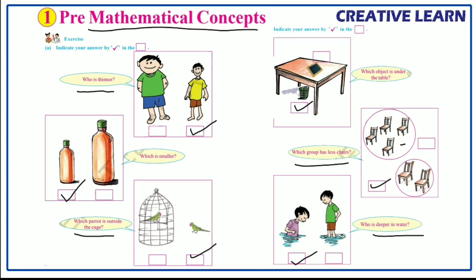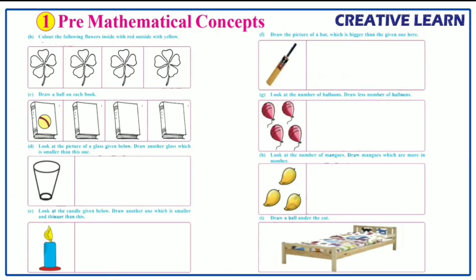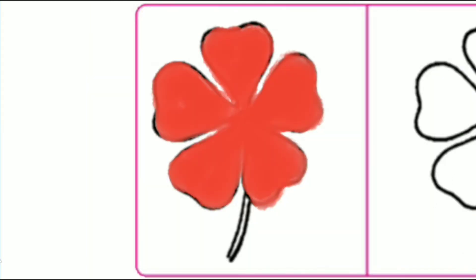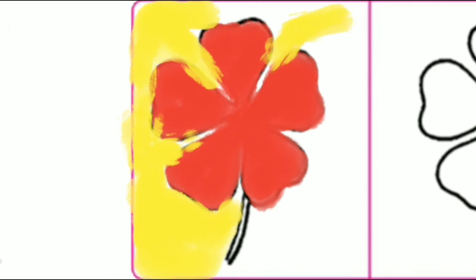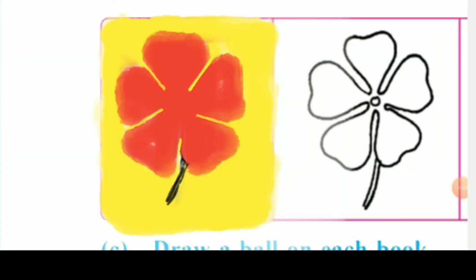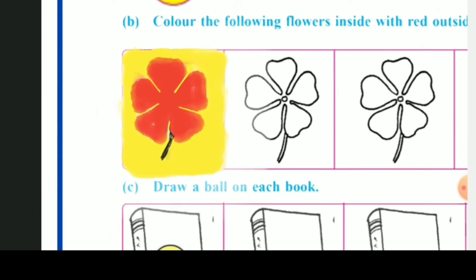All questions are completed. Now we have some more activities in this exercise. The first one: color the following flowers inside with red and outside with yellow. Some flowers are given — we have to fill red color inside and yellow color outside. Let's do this. First one is done — fill the color in the remaining flowers also.